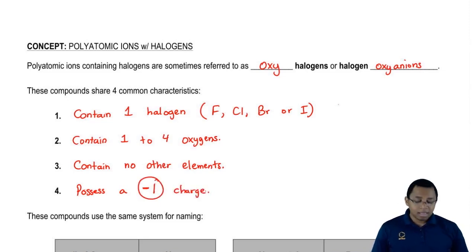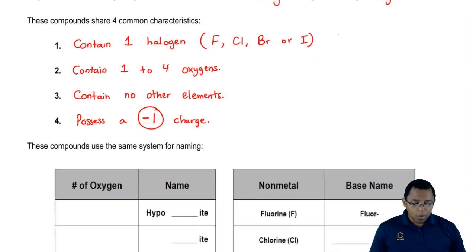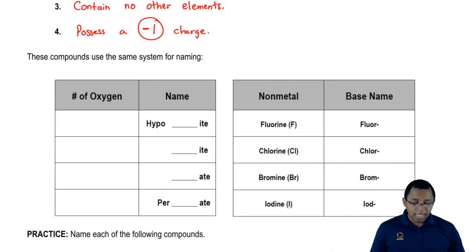Those are the four characteristics all of these compounds possess. These compounds use the same naming system based on the number of oxygens present.